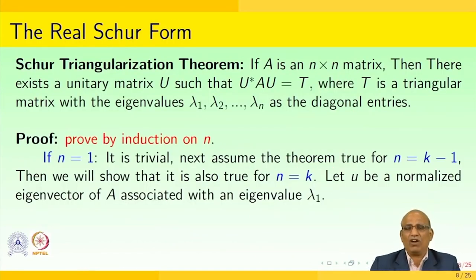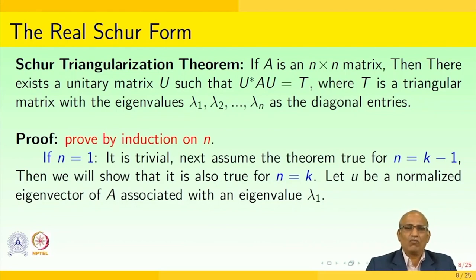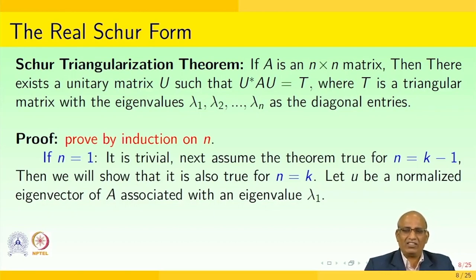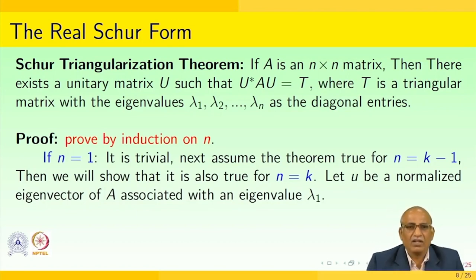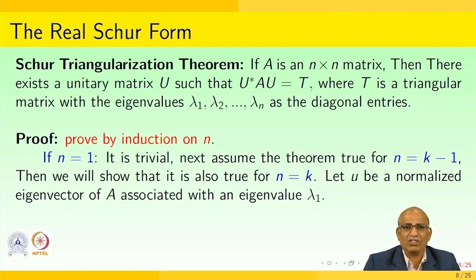Having obtained the QR factorization — since the coefficient matrix cannot be solved directly — we look for ways to factorize the matrix. One such algorithm is QR factorization. Let us now go ahead with the continuation: the real Schur form. What is the Schur form, and how is it useful in matrix computation?